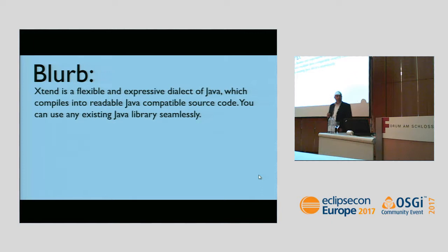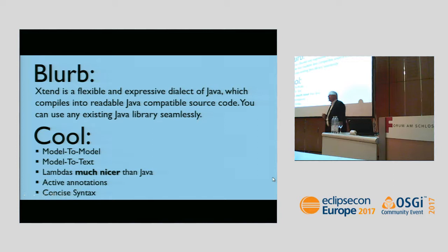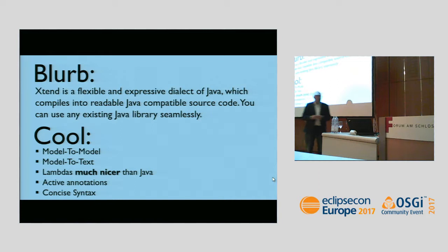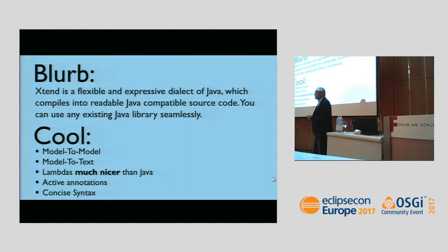I'll have one or two introductory slides giving a general idea about Xtend. The blurb from the web page says Xtend is a flexible and expressive dialect of Java which compiles into Java source code, and you can integrate any Java library seamlessly. But what's totally missing from that description is what makes Xtend very cool for modeling: specific language features for model-to-model transformation, model-to-text transformation, nicer lambda syntax, and active annotations.